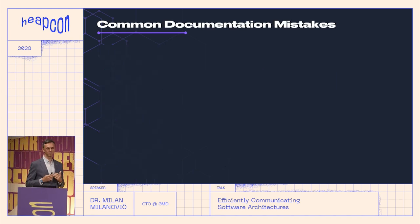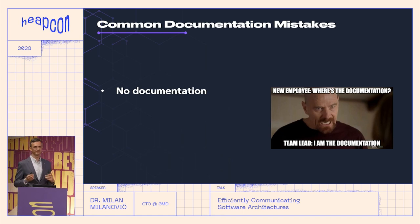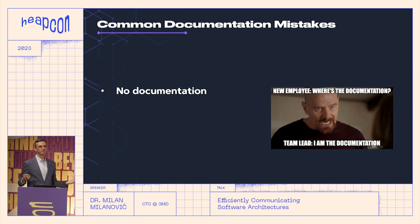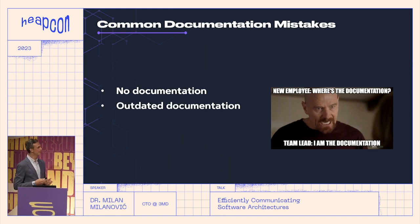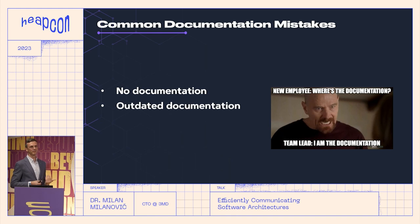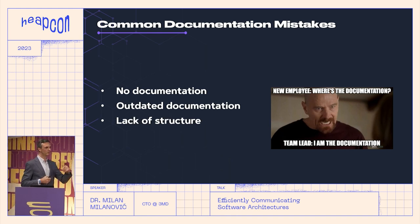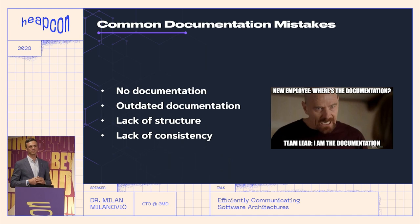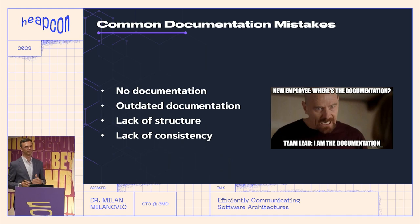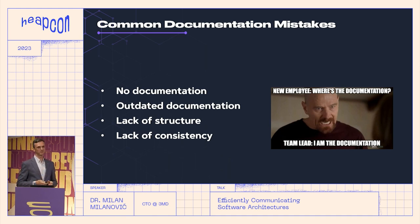What are some common documentation mistakes I've seen? Of course, no documentation — you will see this a lot, especially newcomers complaining they don't have any docs and the person they need to talk to is always busy. Then outdated documentation — this is a bit better, not too much, but still better than nothing. Then lack of structure — this is where you can use Arc42, because you have documentation but it's just scattered all around. And of course, lack of consistency, meaning that for some parts of the system you have good docs but for some parts you don't. We want documentation at least for the core systems in our software solution.